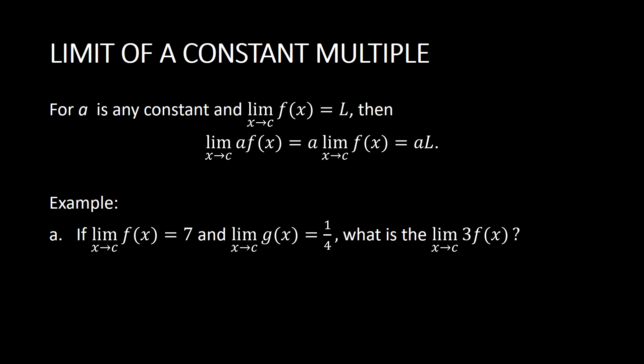The limit of a constant multiple: for any constant a, if the limit of f(x) as x approaches c equals L, then the limit of a times f(x) as x approaches c is equal to a times the limit of f(x) as x approaches c, which equals a times L. Notice that once we multiply a and f(x) inside a limit, we pull a before the limit and then evaluate the limit of f(x). Since the limit of f(x) as x approaches c is L, we simply multiply a and L.